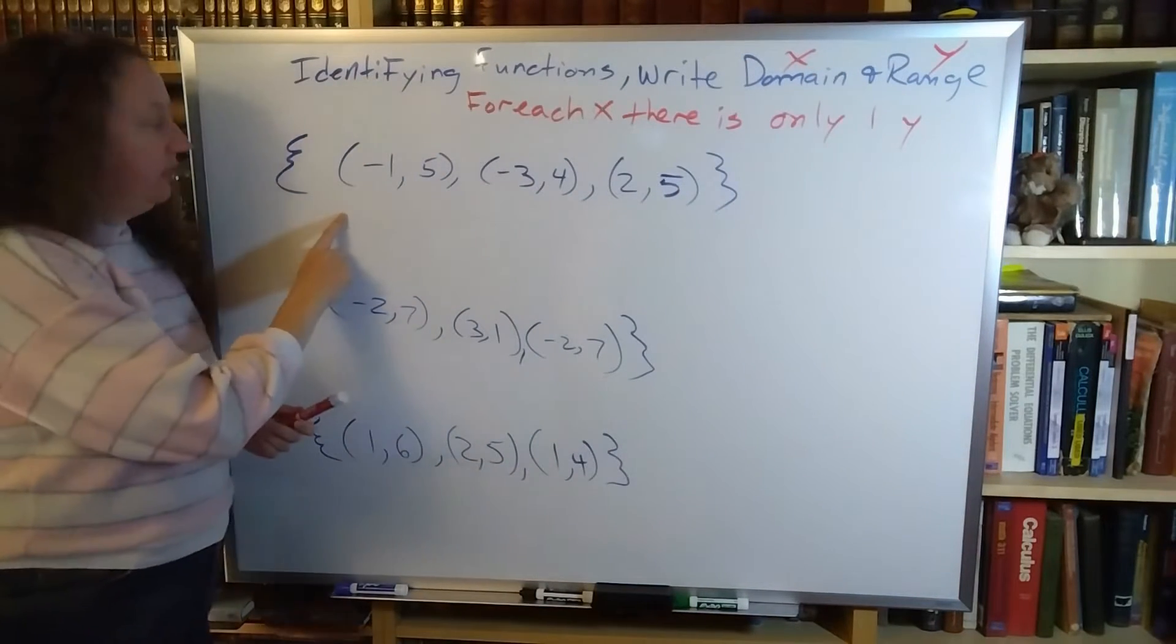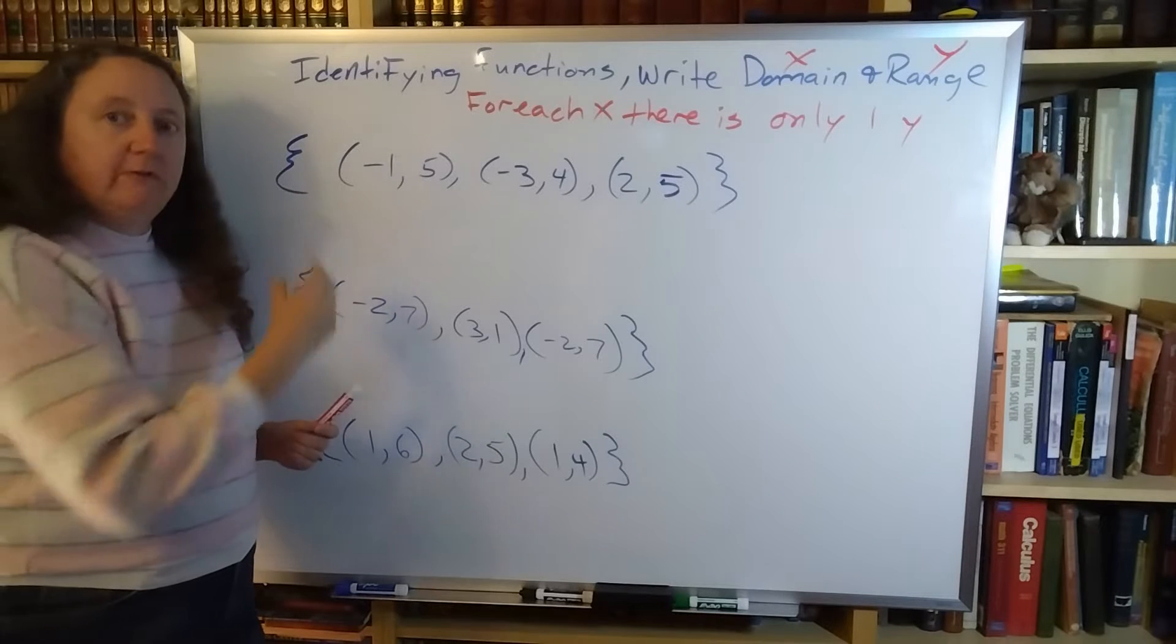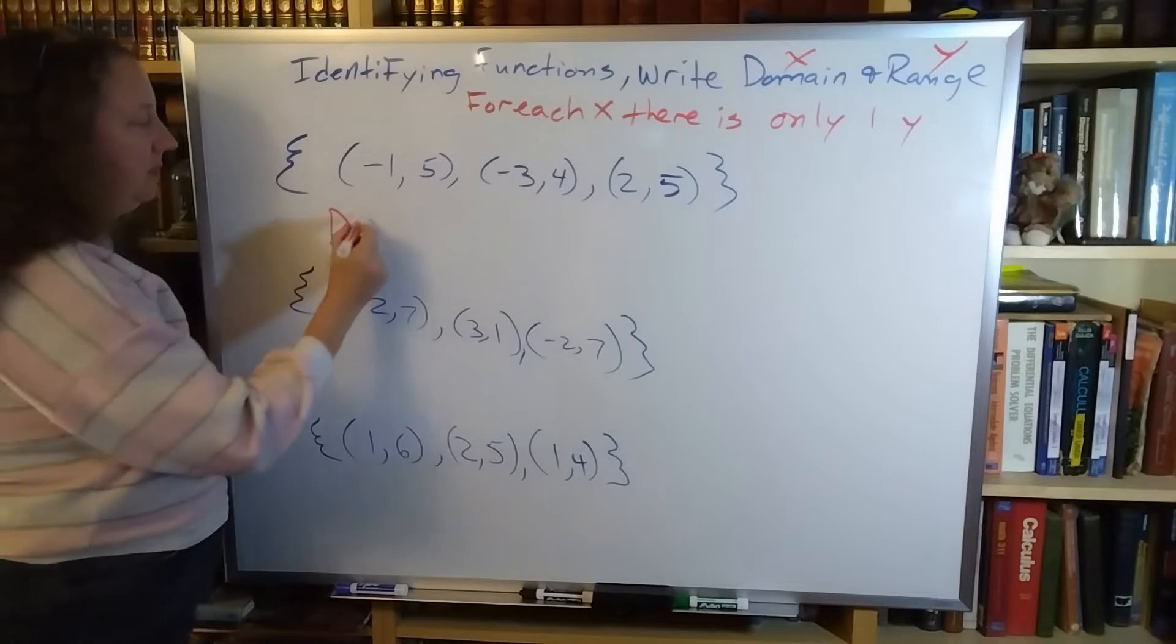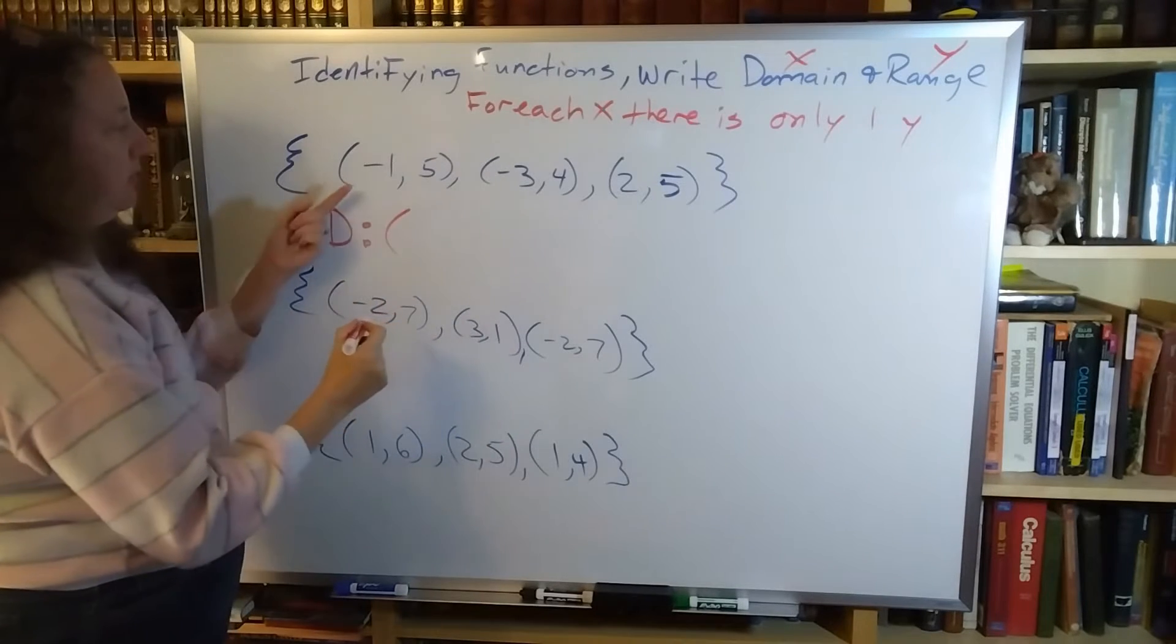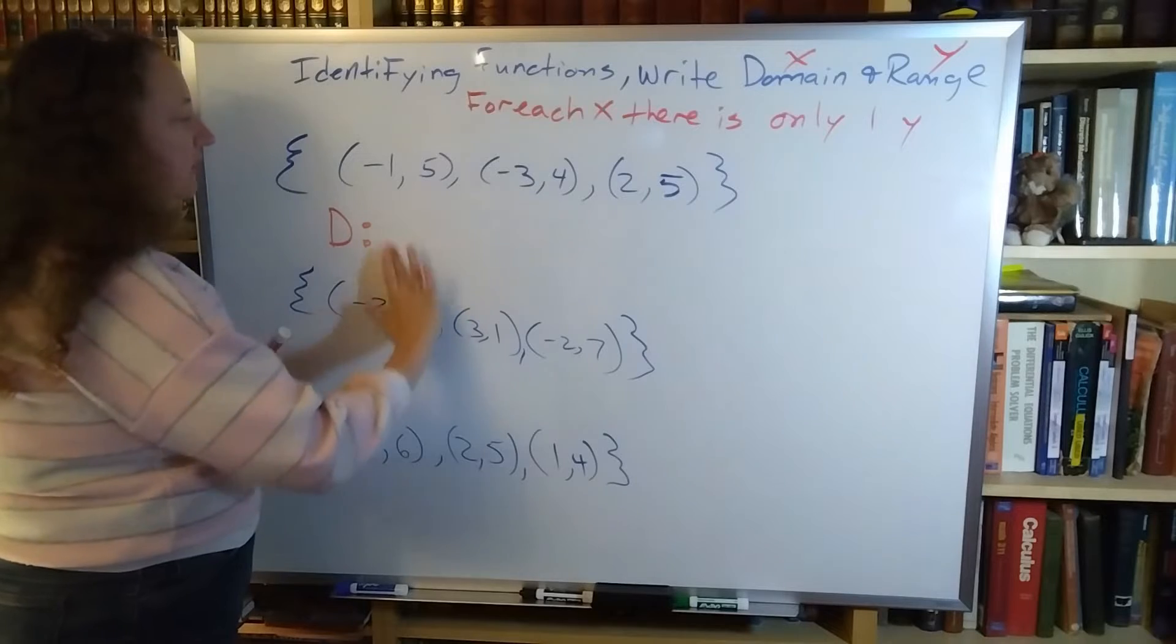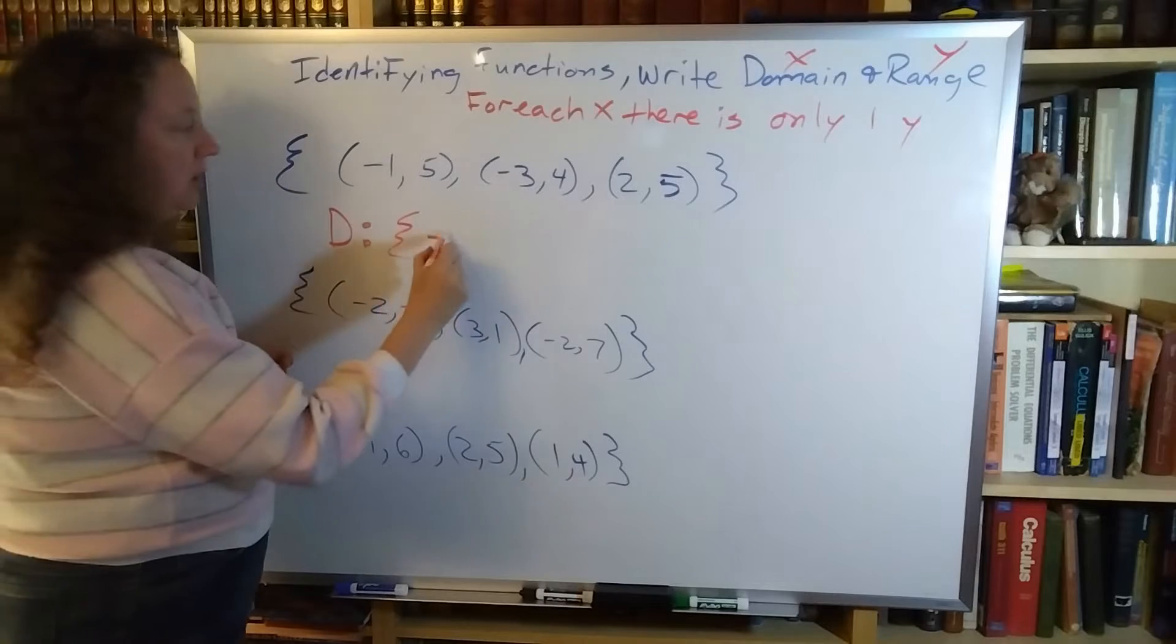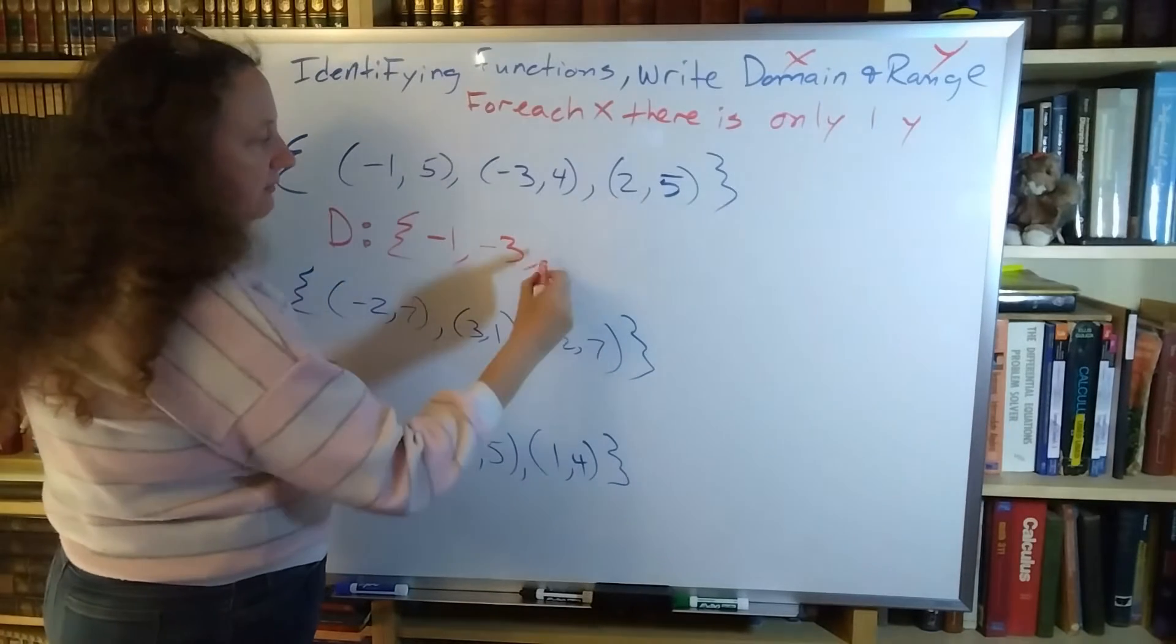Looking at my first example here, I want to find out what is my domain, what are my x's. My domain is going to be the numbers - I want this to be a curly brace to say it's only these numbers. It's only going to be the negative 1, the negative 3, and the positive 2.